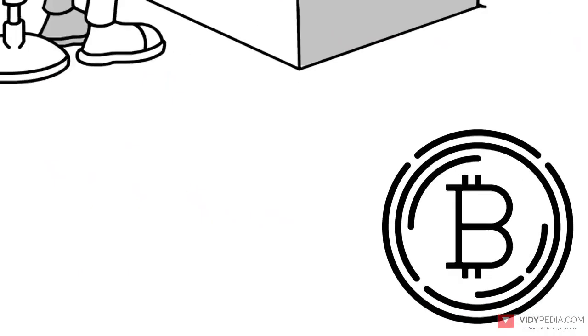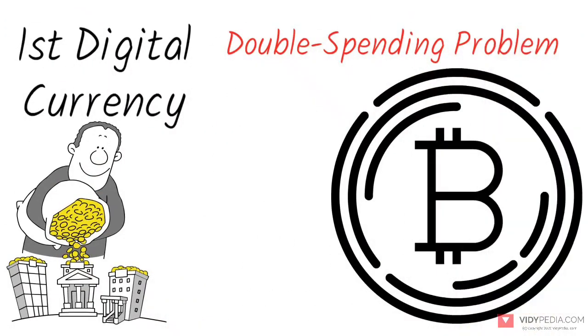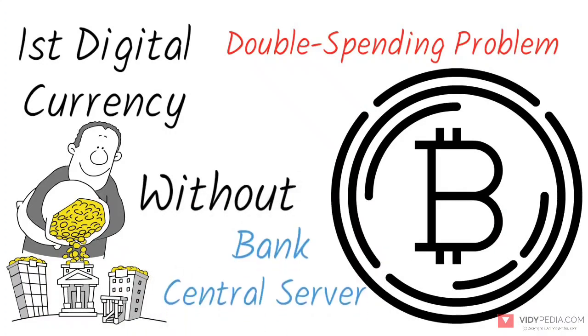The invention of the blockchain for Bitcoin made it the first digital currency to solve the double spending problem without the need for a trusted authority like a bank or central server.